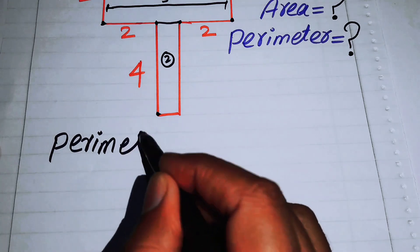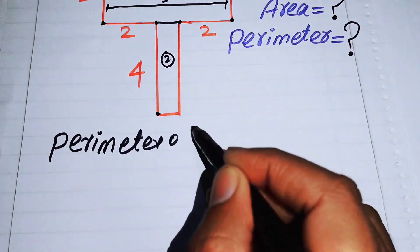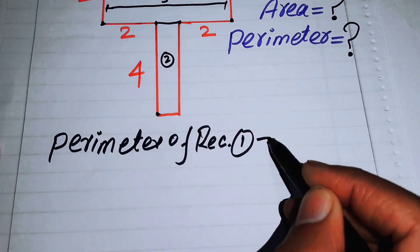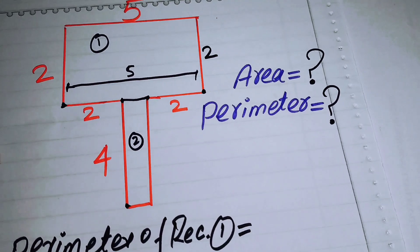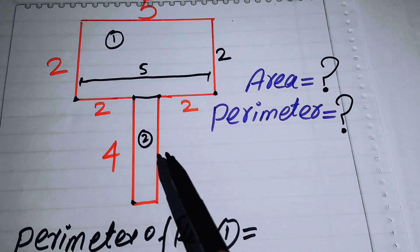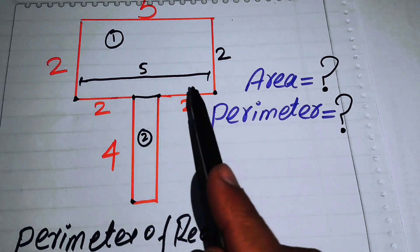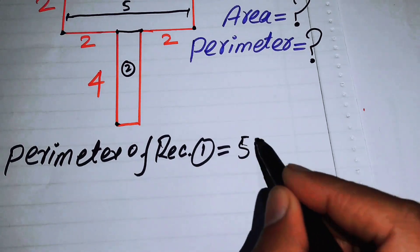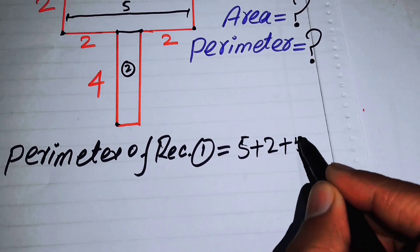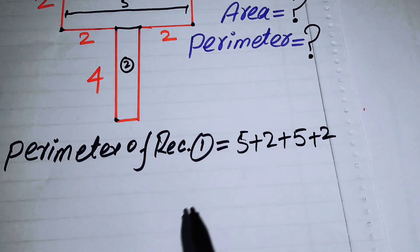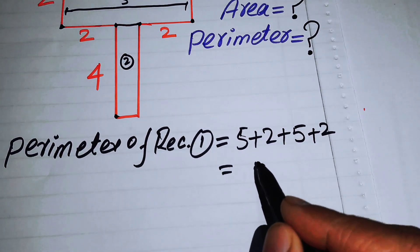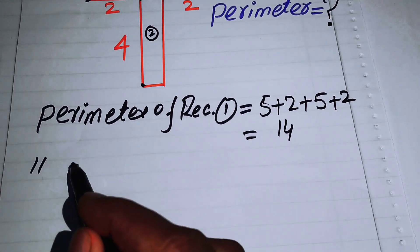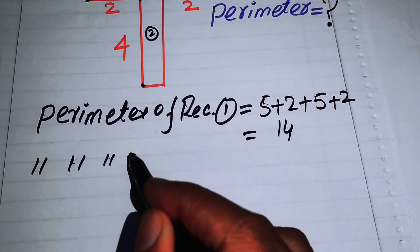The perimeter of Rectangle 1 is the sum of all its sides: 5 + 2 + 5 + 2, which equals 14.